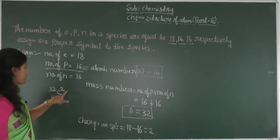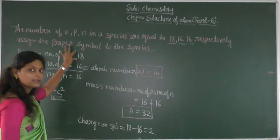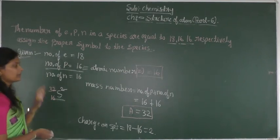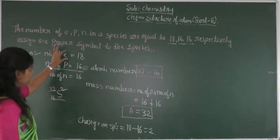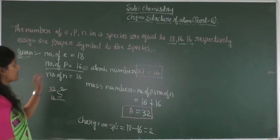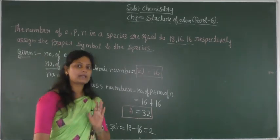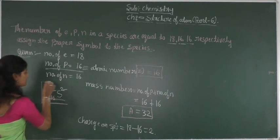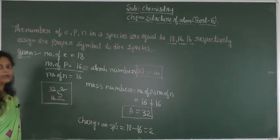Since the number of electrons is greater than the number of protons, the charge is negative — we write a negative sign. If electrons are greater than protons, the species is negatively charged and called an anion. Conversely, if protons are greater than electrons, the species is positively charged and called a cation. Therefore, the result is the sulfide ion S²⁻, which is an anion.